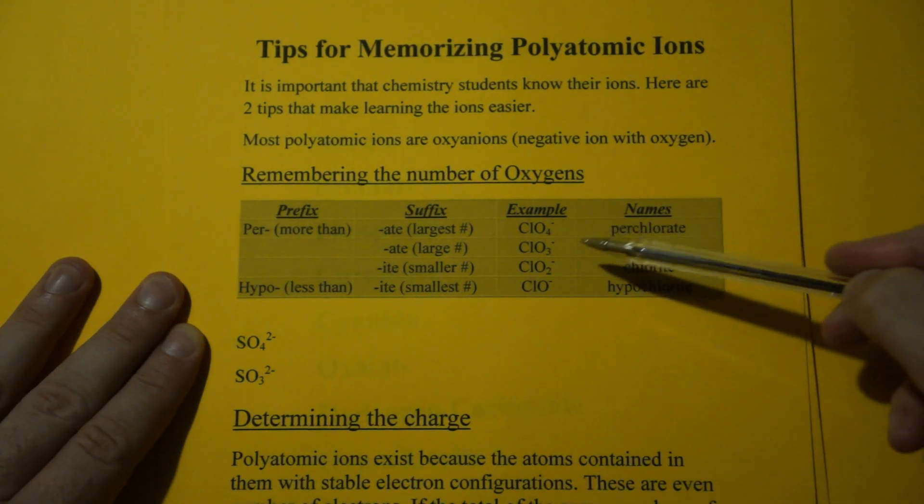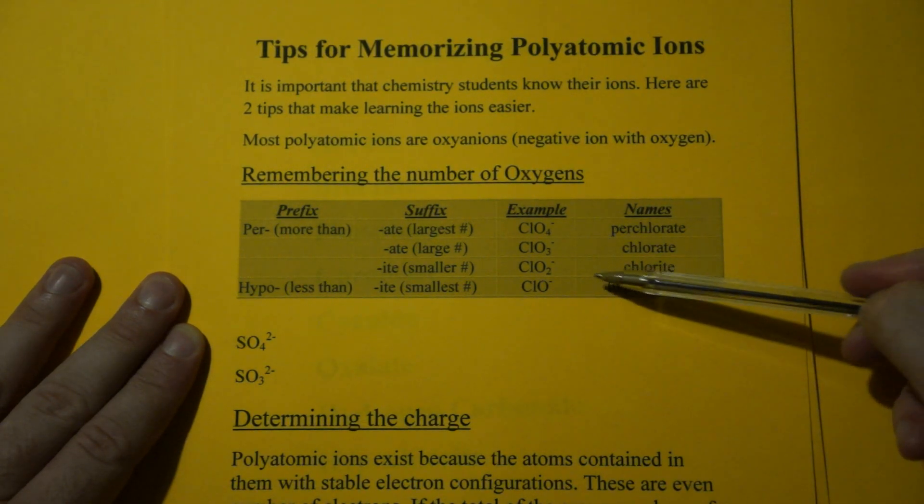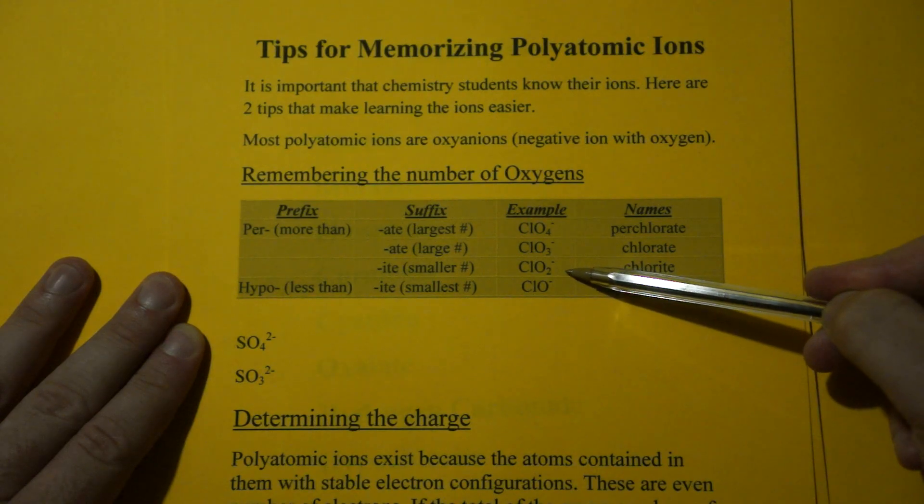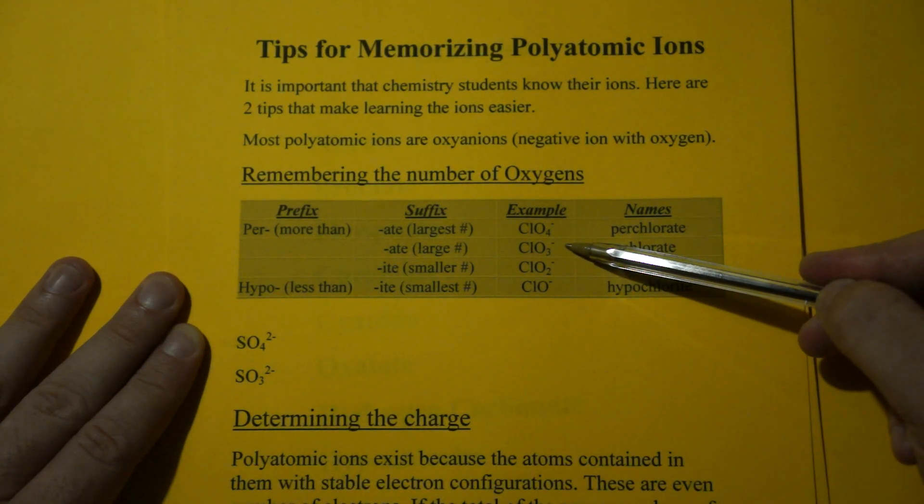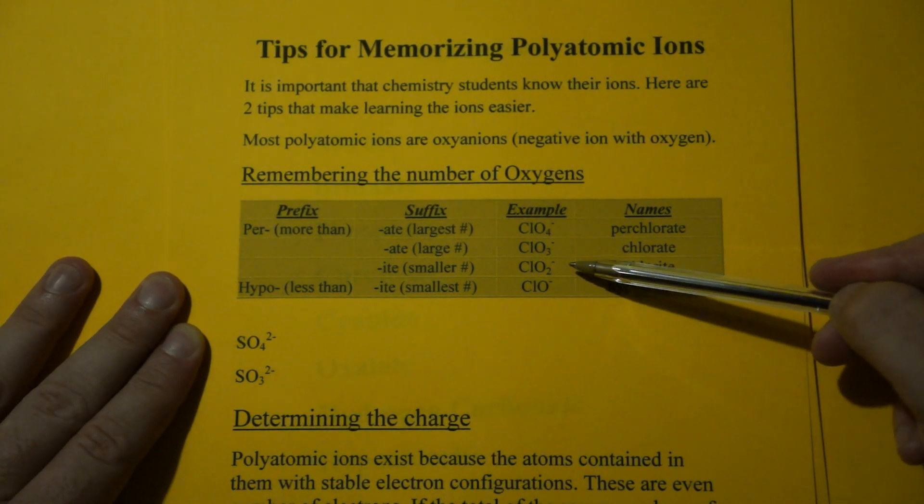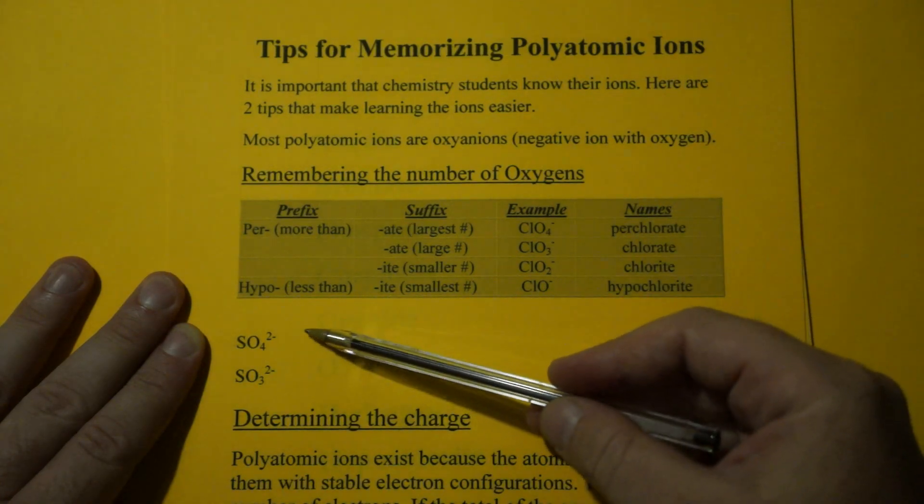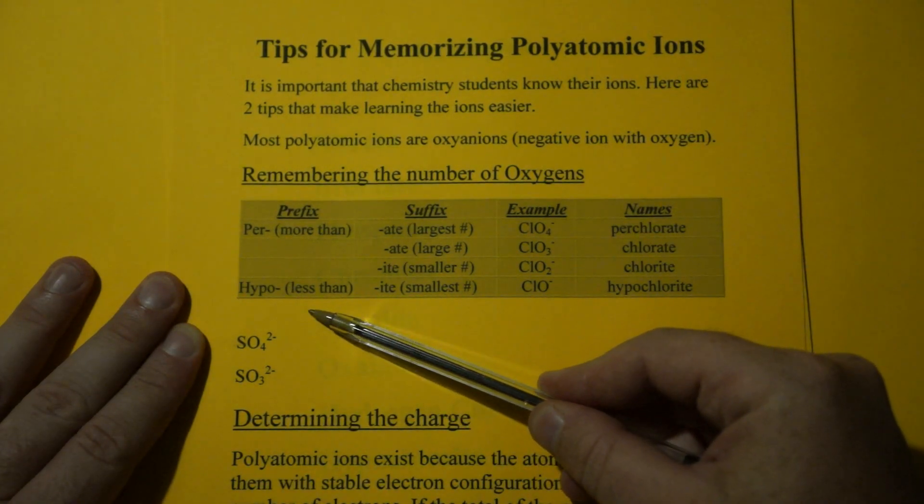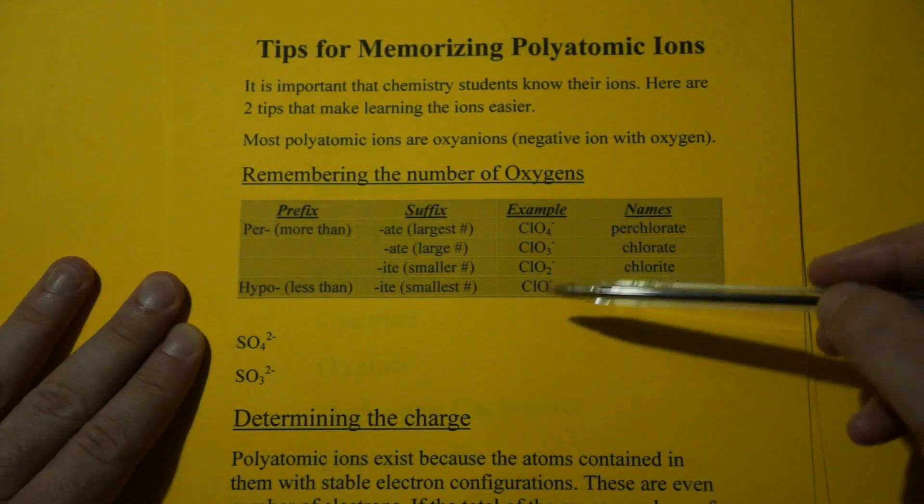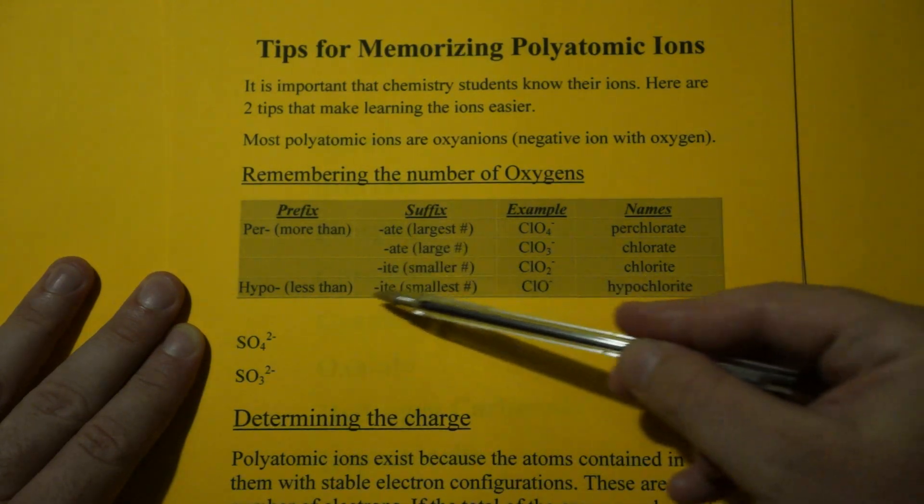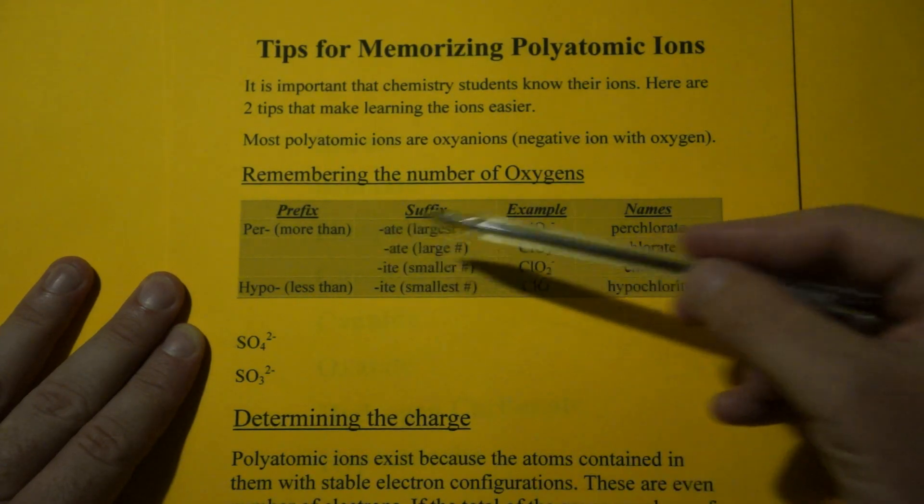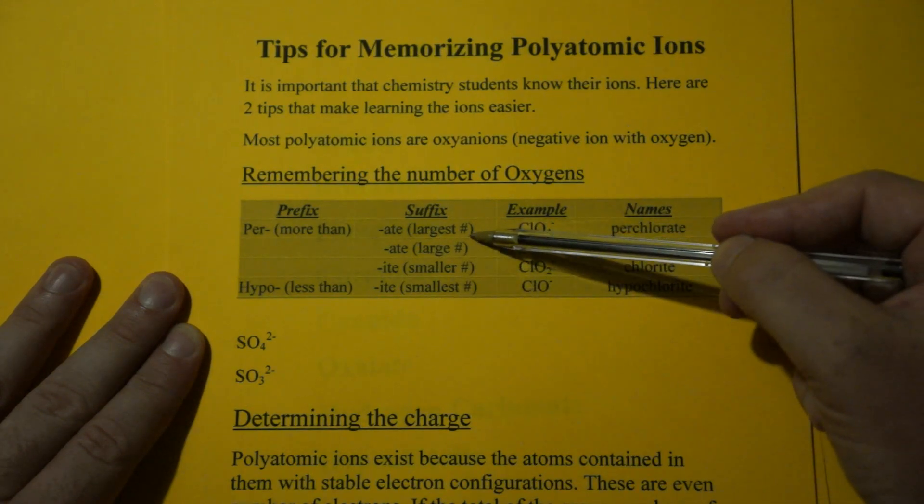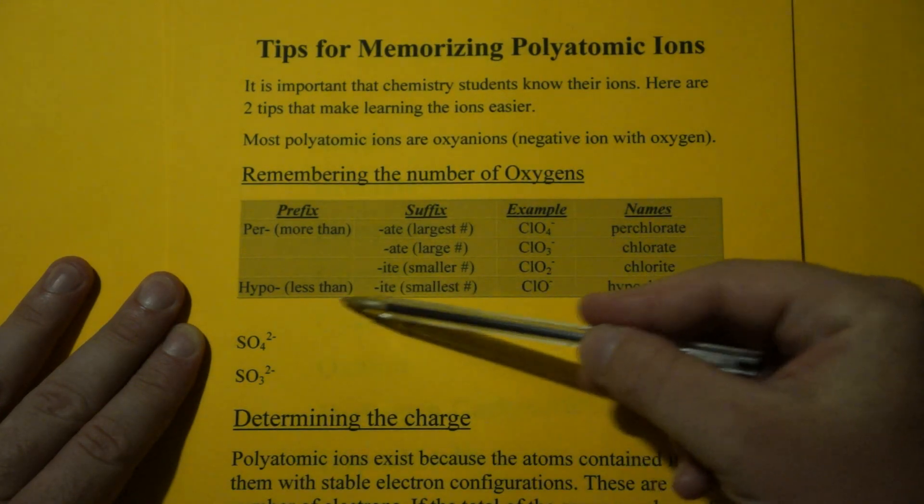So in the example, you have chlorate, ClO3 minus 1, has one more oxygen than chlorite, ClO2 minus. Now, one less than chlorite is hypo, which is two less than the -ate. And then one more than -ate is per. So the order is per-ate, -ate, -ite, and hypo-ite.